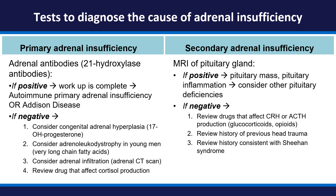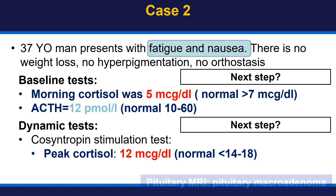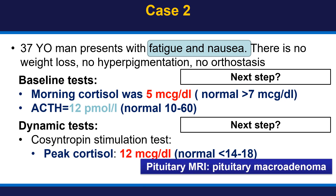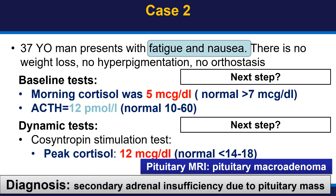Now that secondary adrenal insufficiency has been diagnosed, the next step is to determine the cause. MRI of the pituitary gland should be done in every patient with newly diagnosed secondary adrenal insufficiency unless a clear cause such as exogenous glucocorticoids is identified. If MRI is positive — for example, a pituitary mass or pituitary inflammation — other pituitary deficiencies should also be considered. If MRI is negative, we must review drugs that affect CRH and ACTH production such as glucocorticoids or opiates, history of previous head trauma, or history consistent with Sheehan syndrome. In this patient, pituitary MRI was positive for a pituitary macroadenoma, leading to a final diagnosis of secondary adrenal insufficiency due to a pituitary mass.